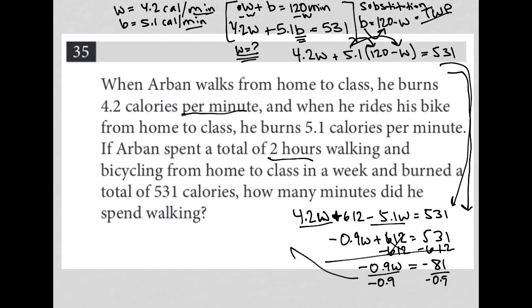And then I just divide both sides by negative 0.9. And I get that W, the amount of time spent walking, is equal to 90 minutes. We don't track our units on this test, so just 90 will be the answer here.